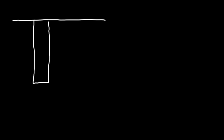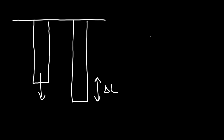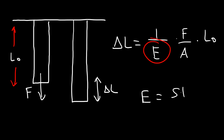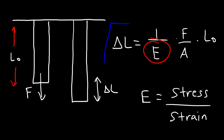Don't forget this equation: when dealing with tensile or compressive stress, if you need to calculate the change in length delta L, use the formula: delta L equals one over E, where E is the elastic modulus or Young's modulus, times F over A (force over cross-sectional area), times the original length L₀. Young's modulus is the ratio between the stress applied and the strain — the fractional change in length of the object.